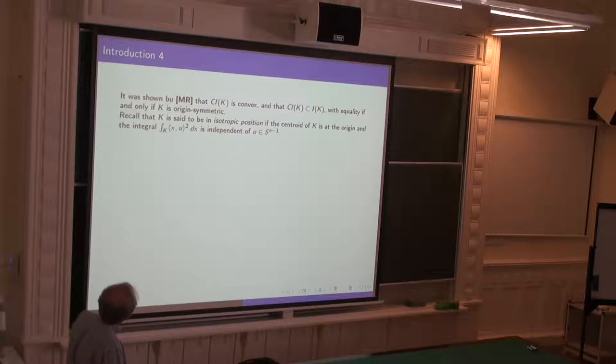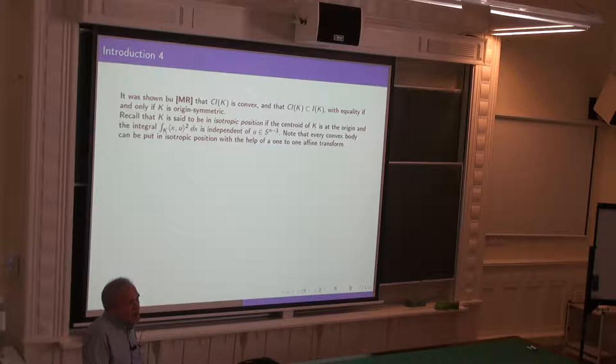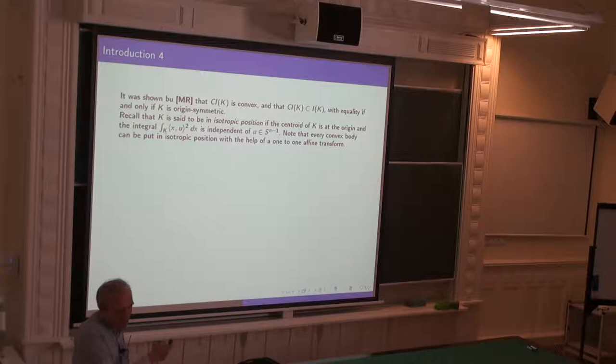I recall that K is said to be in isotropic position if the centroid of K is at zero and the integral over K of (x·u)^2 dx does not depend on u. Every convex body in R^n can be put in isotropic position with a linear — affine — transform, because the centroid has to go to zero.